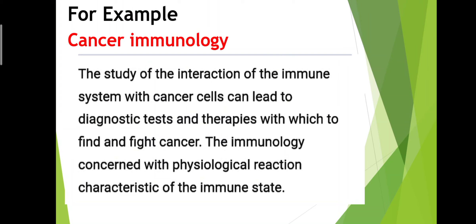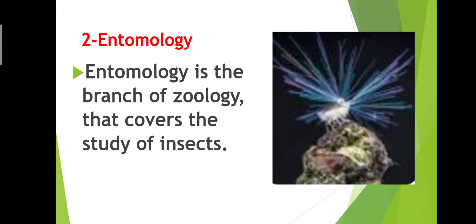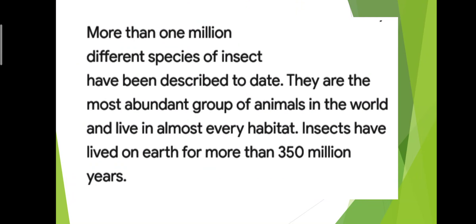Number 2: Entomology. Entomology is the branch of zoology that covers the study of insects. More than 1 million different species of insects have been described to date. They are the most abundant group of animals in the world and live in almost every habitat. Insects have lived on Earth for more than 350 million years.